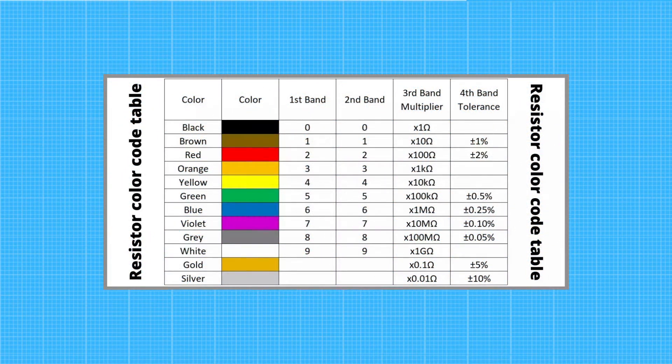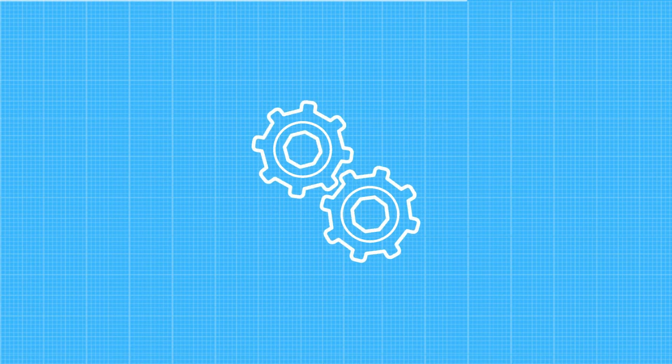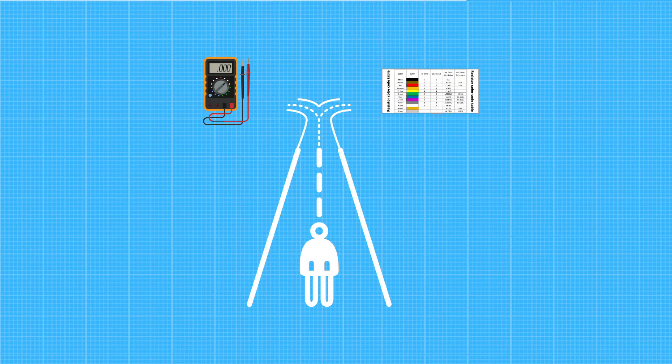Another way is to simply use the value table. Compare colors with values and calculate. There are also a few more ways you can find out the unknown value of a resistor, but these are the easiest ways for beginners.